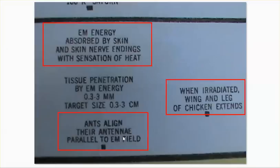Ants align their antennae parallel to the electromagnetic field. Remember that video? I posted it — somebody was showing with their cell phone how when they turned on the cell phone, all ants began to circle the cell phone. You could see it happen. The ants were kind of scattered, and turning it on, suddenly all of the ants were like robot ants walking in a circle.